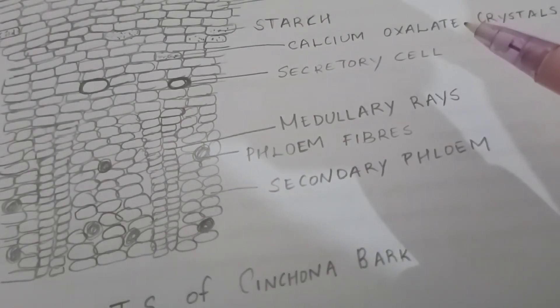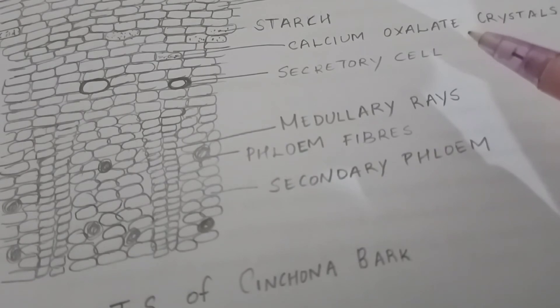Then comes the third portion which is the secondary phloem which comprises of phloem parenchyma, phloem fibers, and medullary rays.